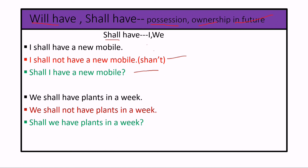Coming to 'shall have': the verb 'shall have' is used after I and we — first person personal pronouns. For example: 'I shall have a new mobile.' This is the future tense.